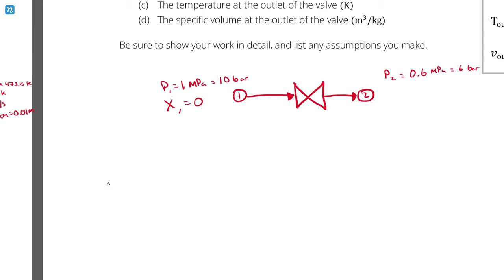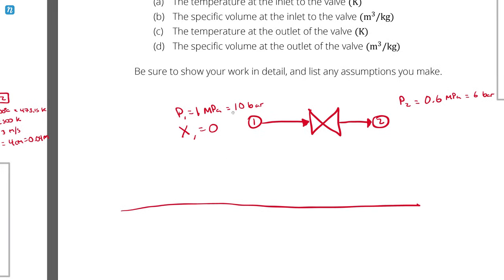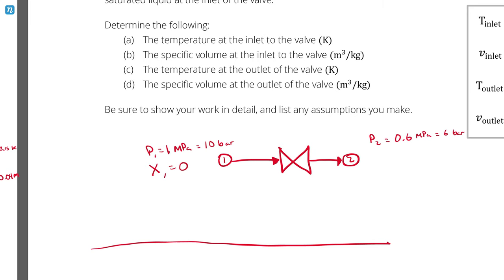Before we deal with the temperature and anything else, at state 1, I know the pressure and the quality. That's two independent intensive properties, enough to fix the state. So I can look up anything else I want to know - the temperature and specific volume. And in order to look up the temperature and specific volume at state 2, I'm going to need to know something else about state 2. My analysis is going to be to try to get another property at state 2.